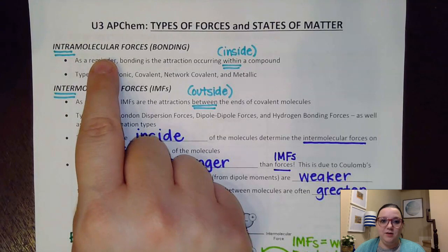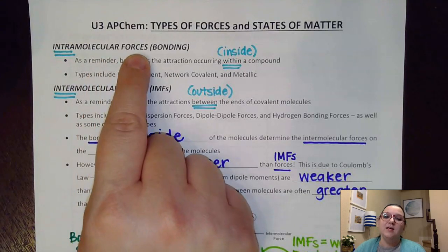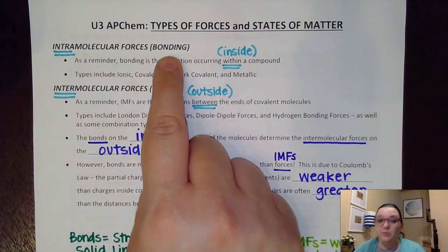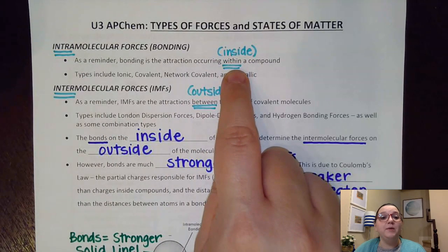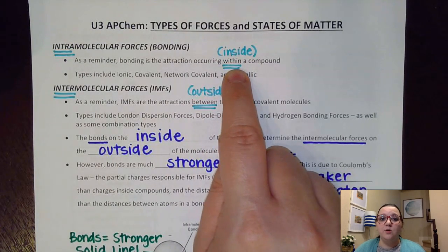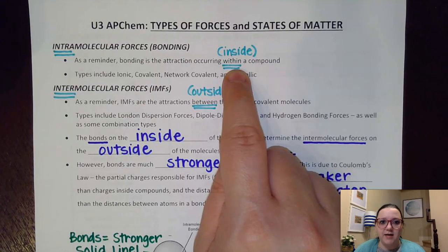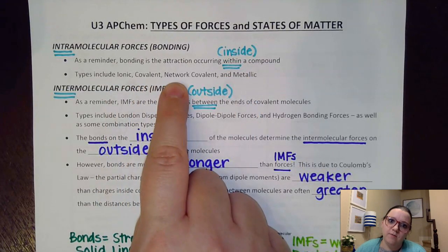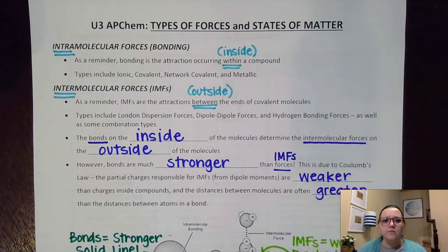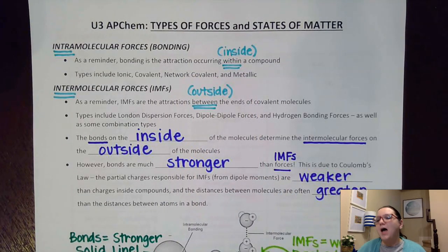Intramolecular forces is more commonly referred to as bonding. 'Intra' refers to what's happening inside or within a compound. So think about all the things we talked about last unit — ionic, covalent, network covalent, metallic bonds — all of those would be intramolecular attractions.